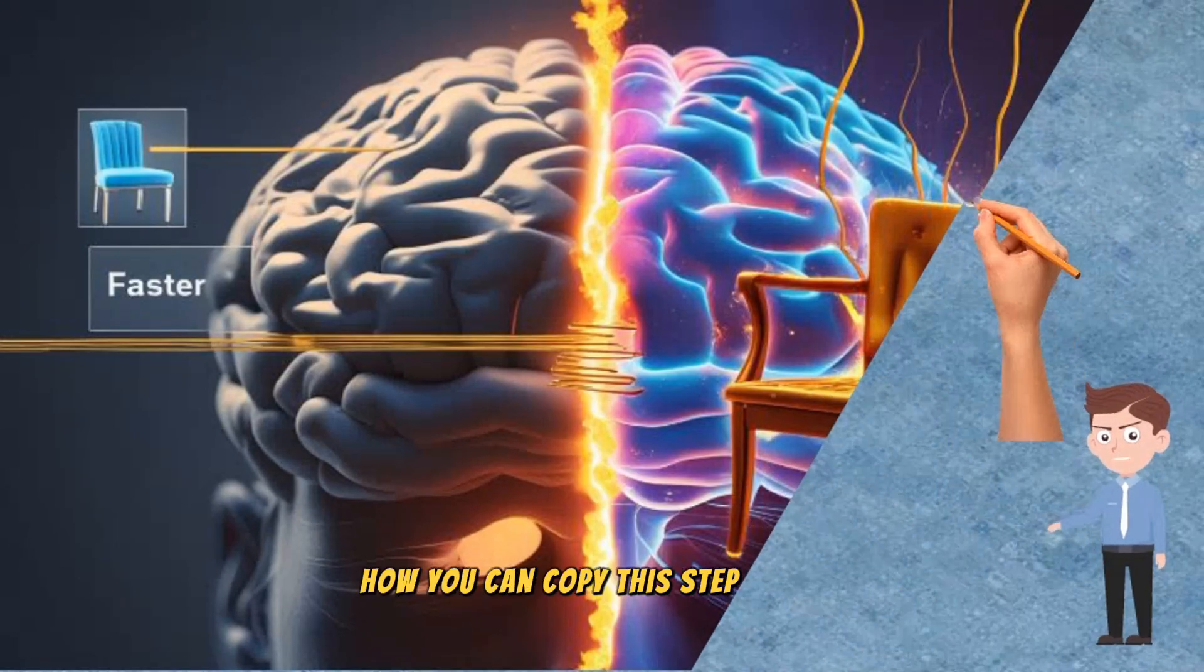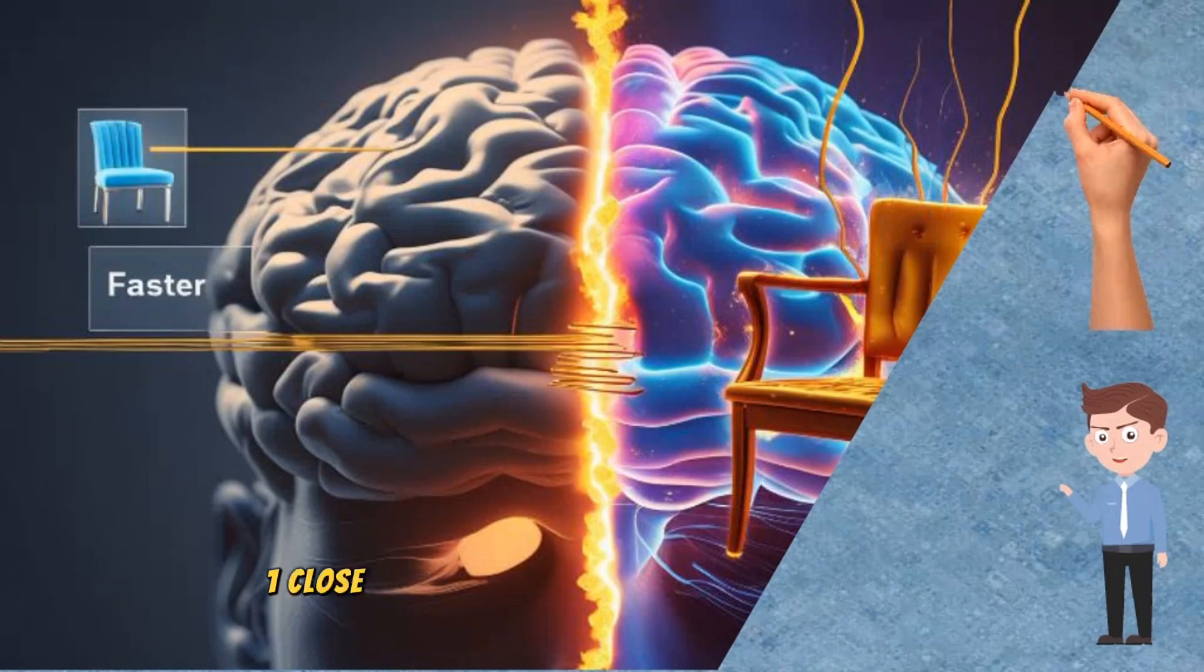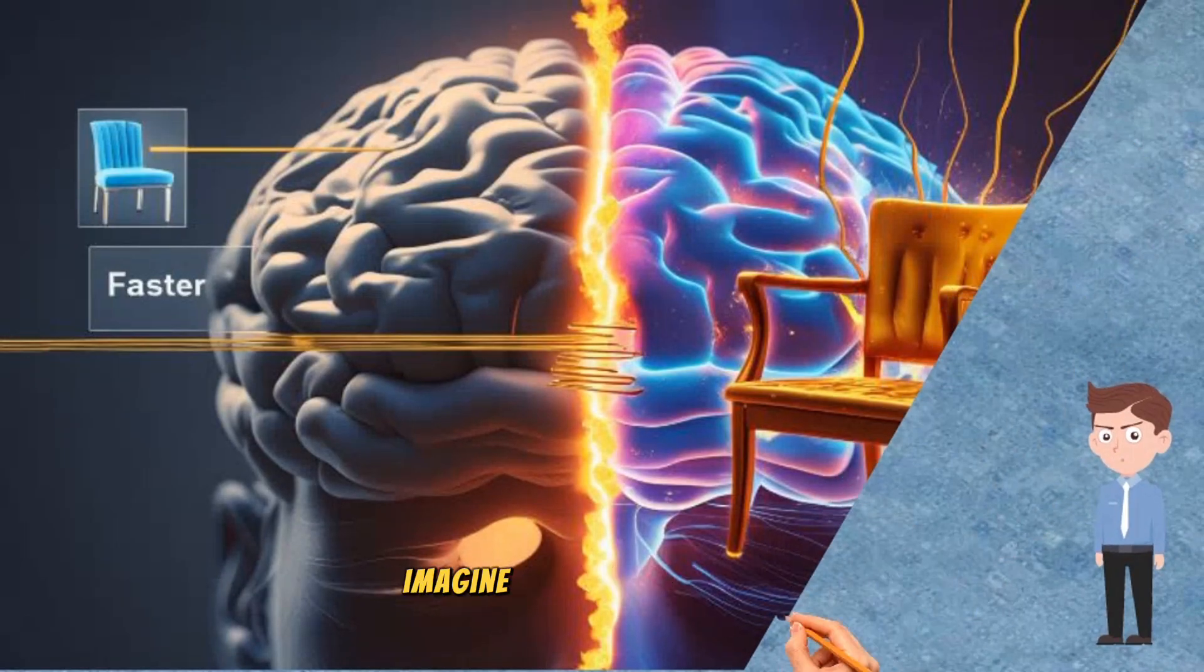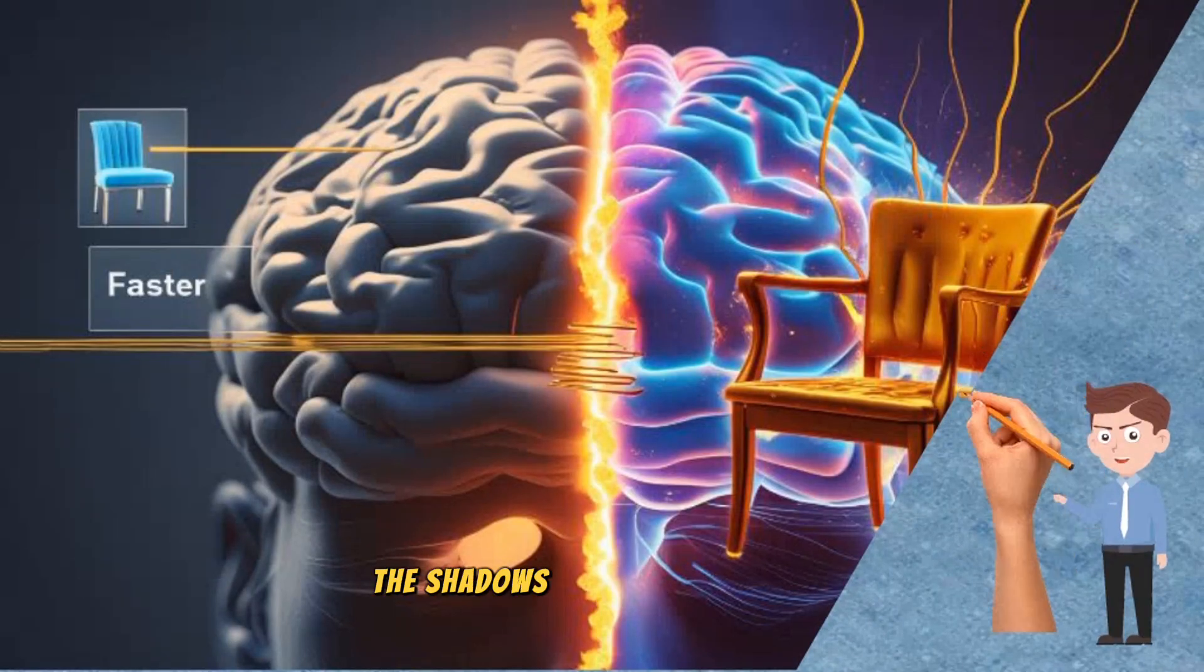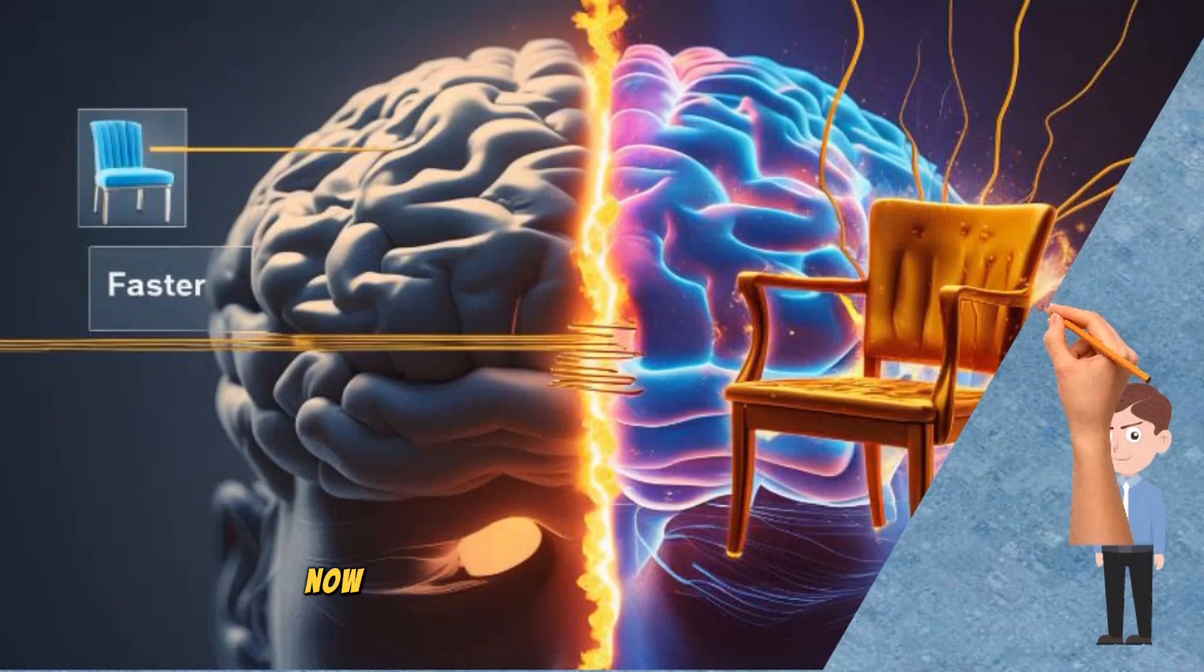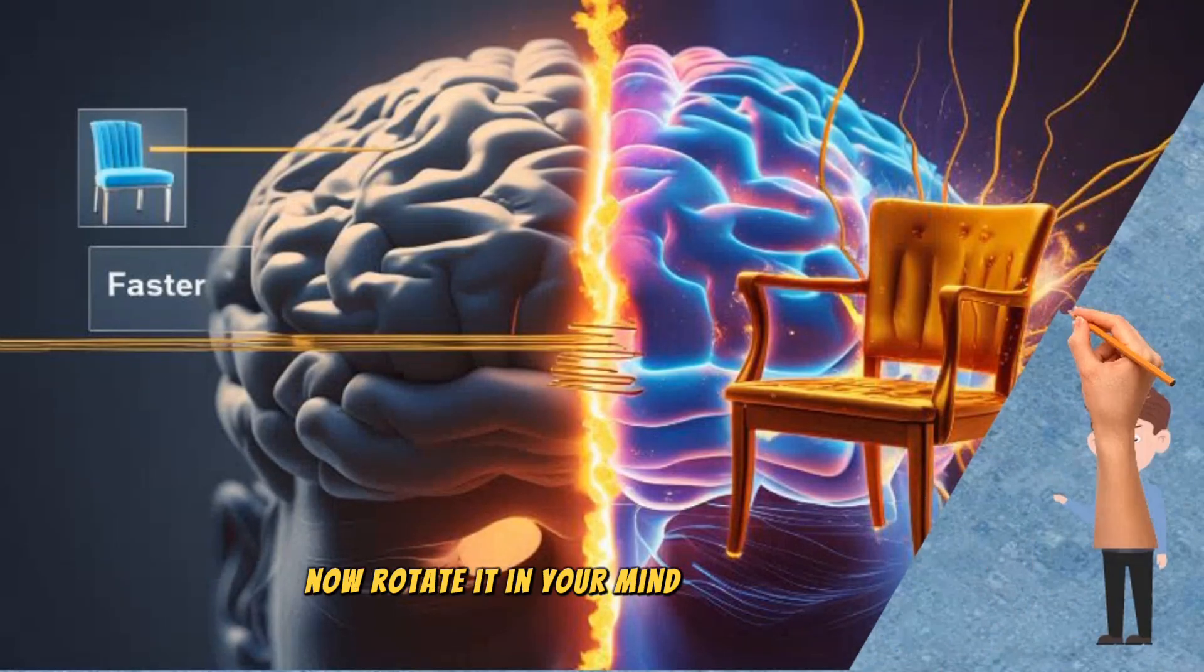How you can copy this, step by step. One. Close your eyes and picture an object in detail. Imagine a chair. Now, zoom in. See the texture of the wood, the shadows, the light reflecting. Now, rotate it in your mind, like a 3D model.